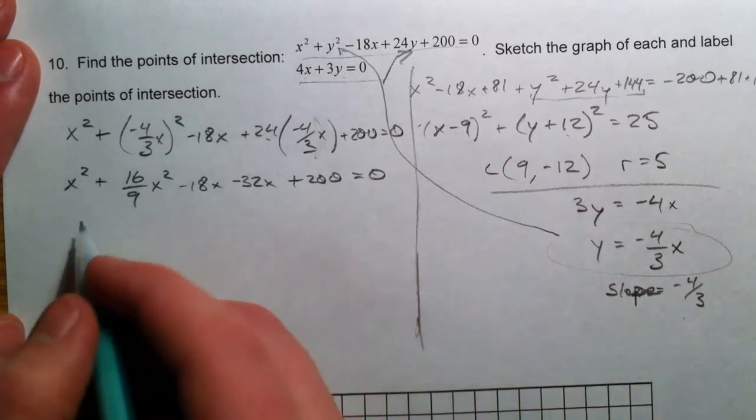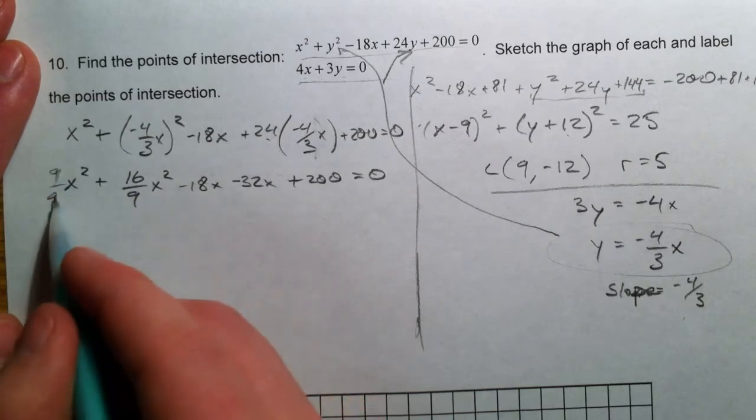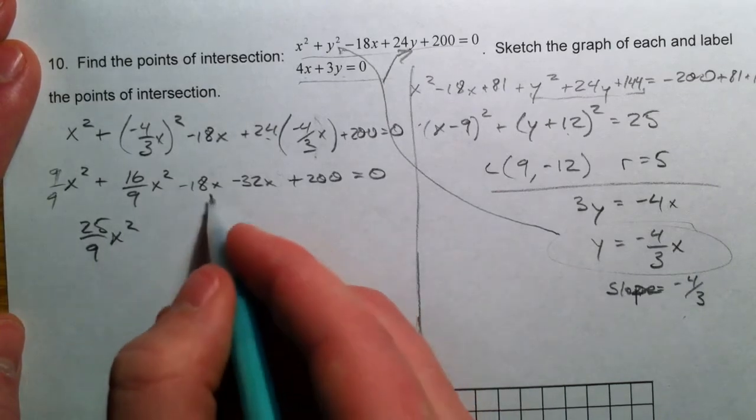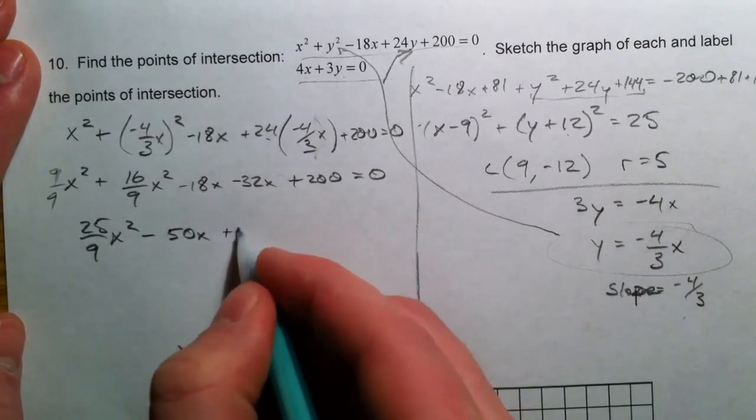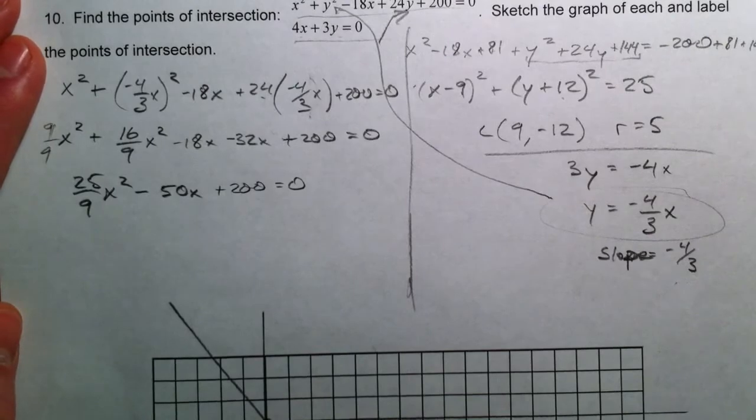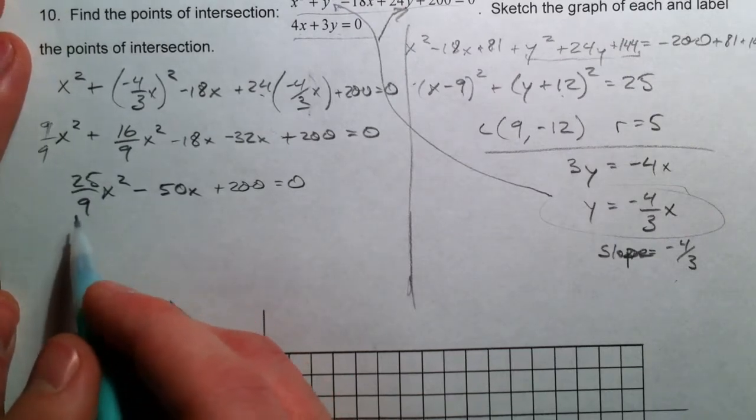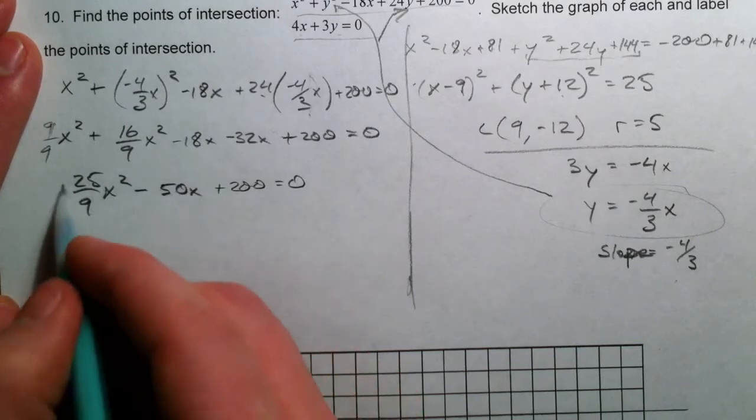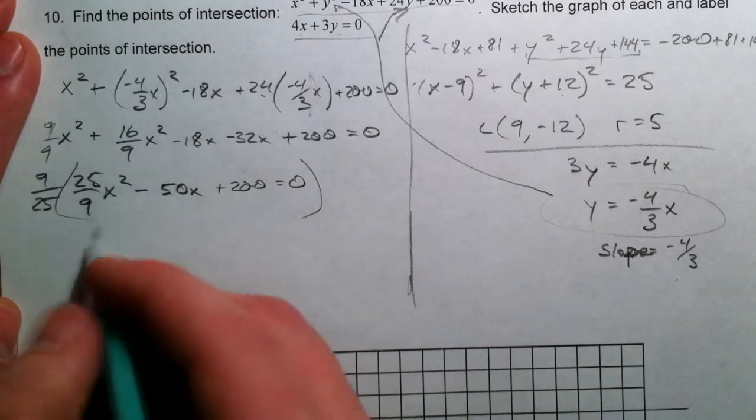Alright. So, combining some like terms. This is 9 over 9x squared plus 16 over 9, which would give you 25 over 9x squared. 18 and 32 make 50 plus 200. So, we're going to get rid of this fraction. Easiest thing to do is I notice that all of the numerators have a multiple of 25 in them. So, I'm actually going to multiply through by 9 over 25.